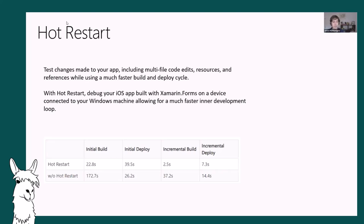With Hot Restart, initial build is 22 seconds compared to 172 seconds for a large application like the Smart Hotel app. Since Hot Restart only bundles your code into a shell, it takes a lot less time. The incremental build is 3 seconds compared to 40 seconds, and incremental deploy is nearly cut in half. Doing this over and over will save you tons of time.